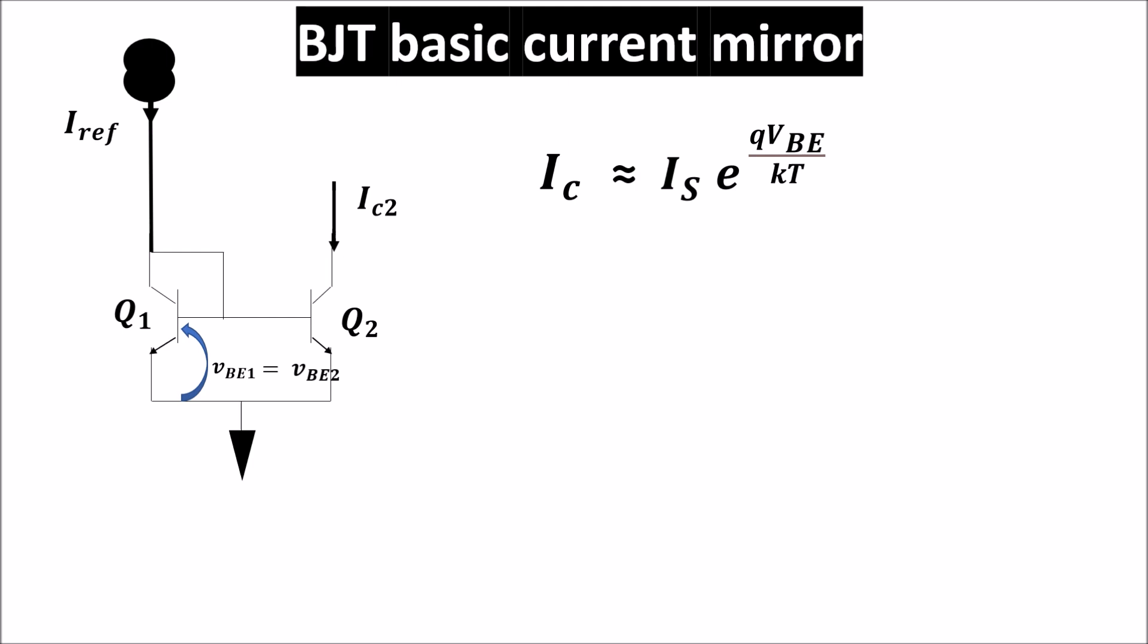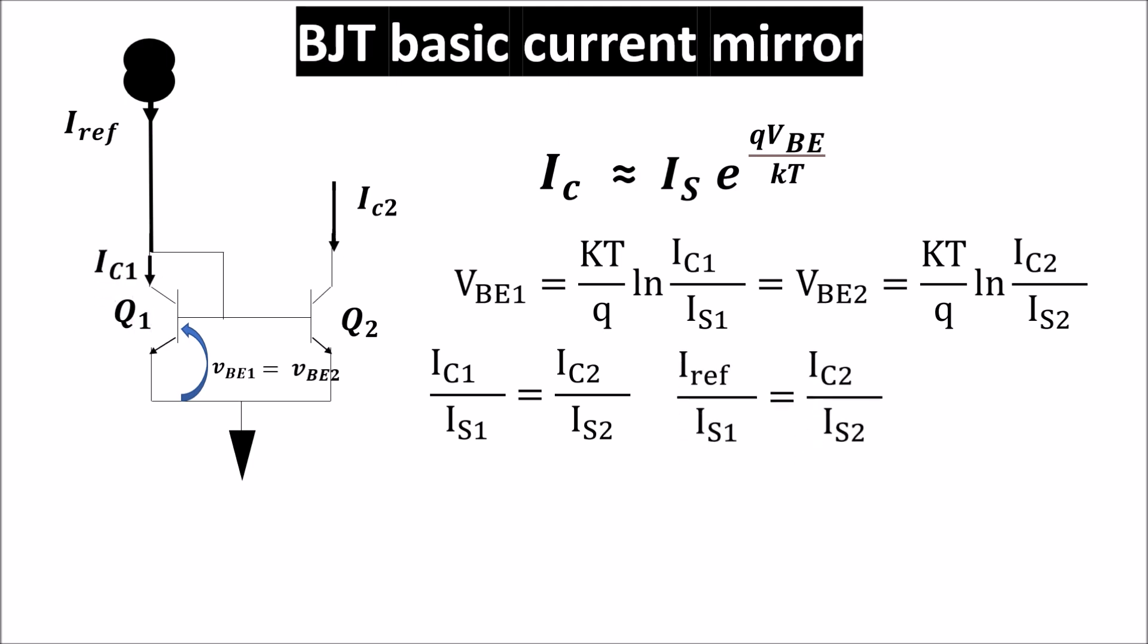We can make explicit VBE1 and write that VBE1 is equal to VBE2 getting the relation between the currents. And assuming for the moment that the collector current of Q1 IC1 is equal to the reference current we can write this. So IC2 which is the mirrored current is equal to IS2 divided by IS1 times Iref. So if IS1 is equal to IS2 the mirrored current is equal to the reference current.